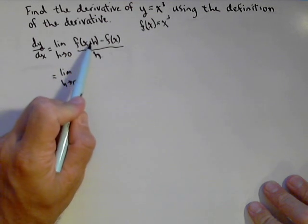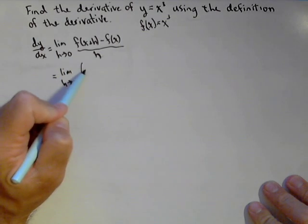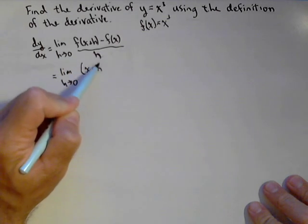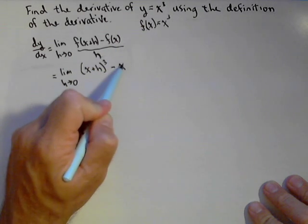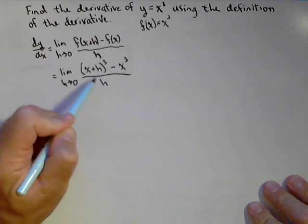f of x plus h is our function with x plus h input. So x plus h, the quantity cubed. f of x is just x cubed, all over h.